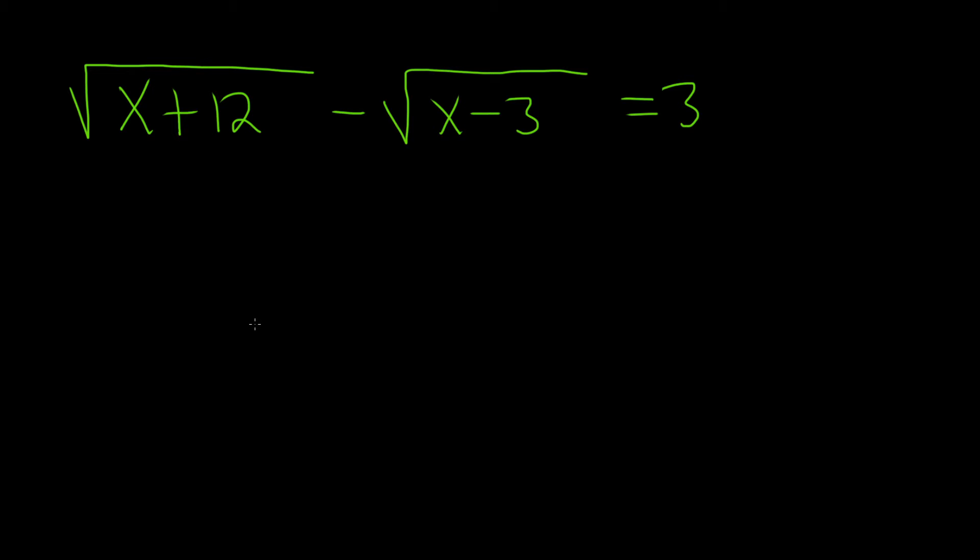We start by solving for one of the square roots. The easiest one is on the left. Let's add the square root of x minus 3 to both sides. These cancel on the left, so we have the square root of x plus 12 equal to 3 plus the square root of x minus 3.